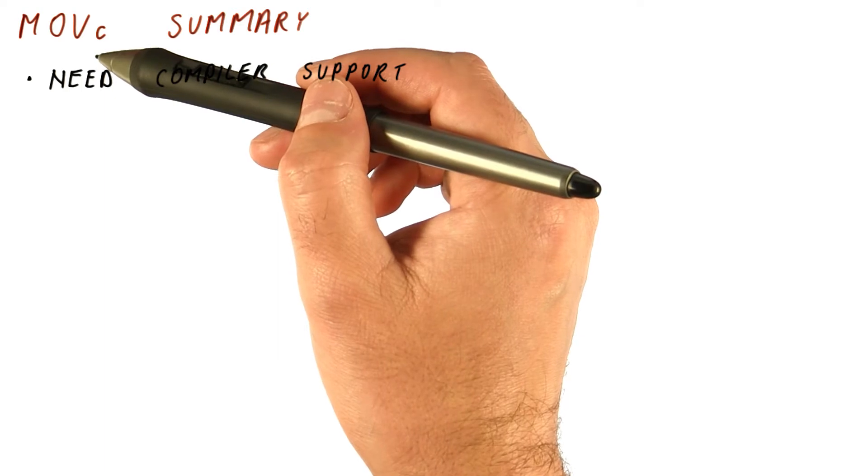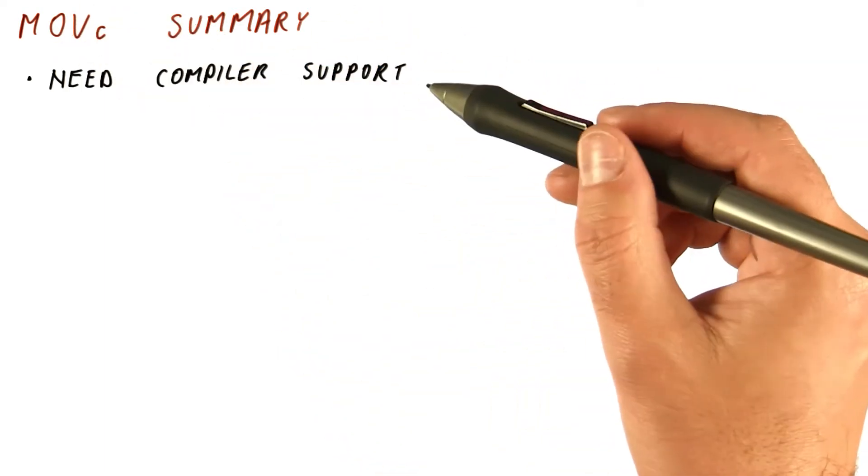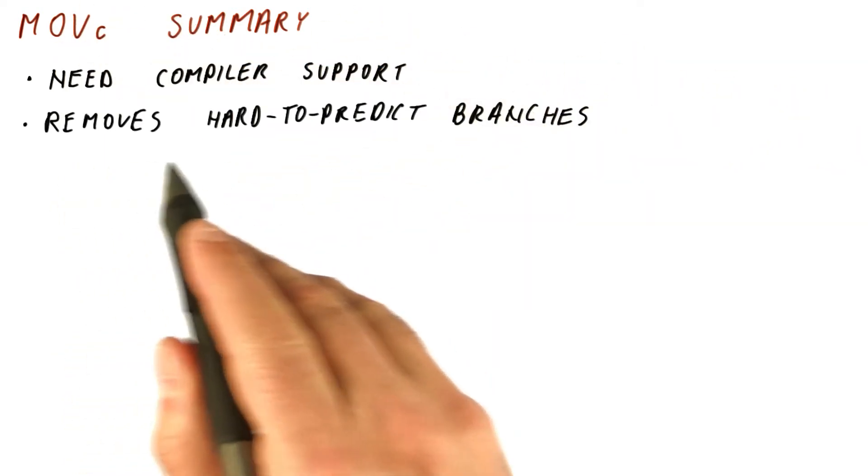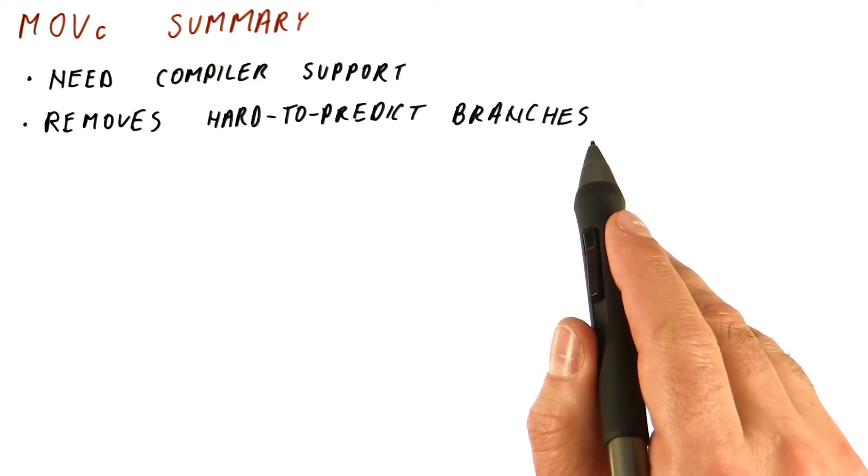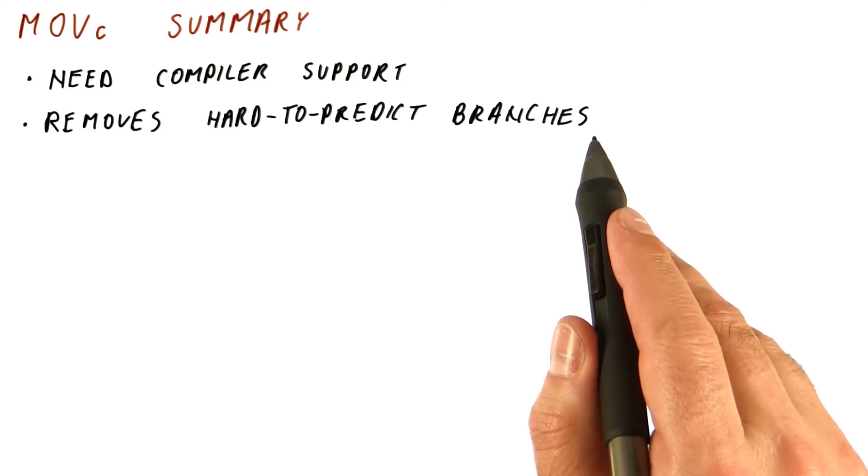This approach will remove hard to predict branches. If we have a hard to predict branch, for example, through profiling, we determine that a particular branch is difficult to predict, we can perform if conversion to get rid of it.